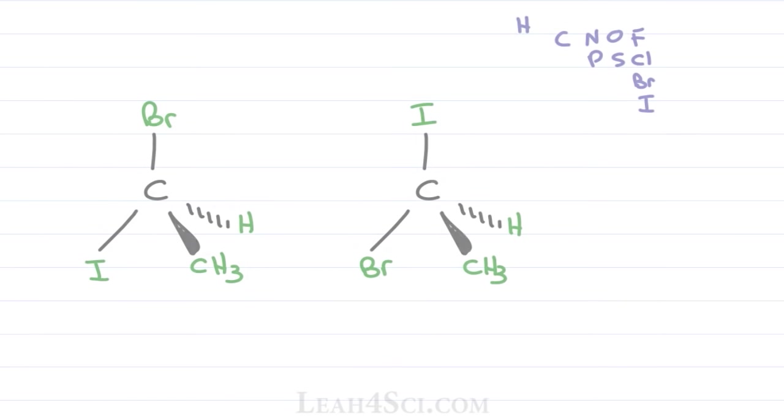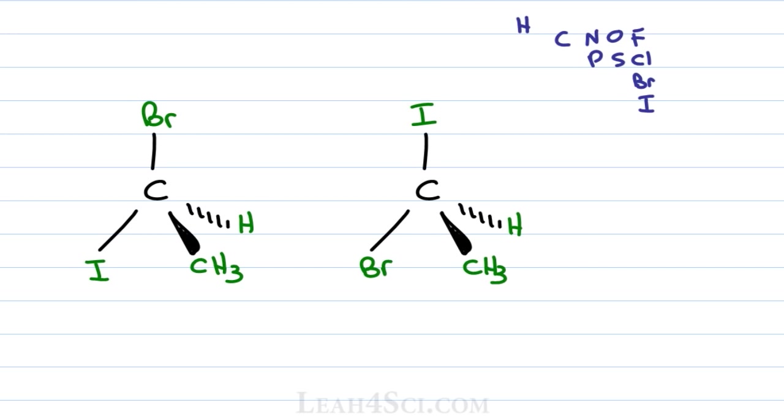We'll start with a simple example looking at two chiral carbons where the substituents are the same but the order is slightly different. I'm including the little cheat guide so you can see the ranking of atoms but I want you to memorize it so they have this ingrained in your head. Let's start with the structure on the left. Any time you see hydrogen, that is always number four.